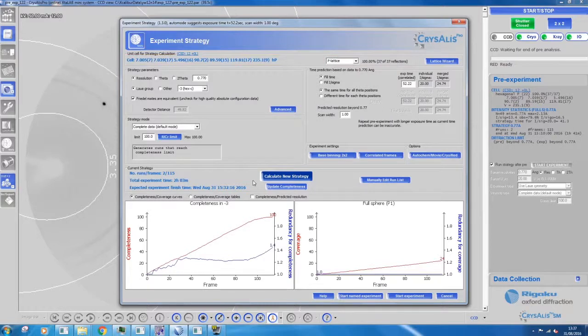If you are collecting data for a chiral compound, untick the Friedel mates are equivalent box. Look at the total experiment time and check that it is suitable.